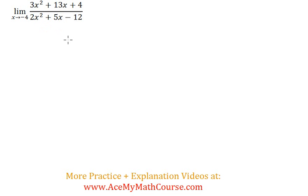So what can we do? Well I can factor the trinomial that I have in the numerator as well as the trinomial I have in the denominator. Then we're gonna hope that something cancels out so that we can actually plug in the negative 4 for x.